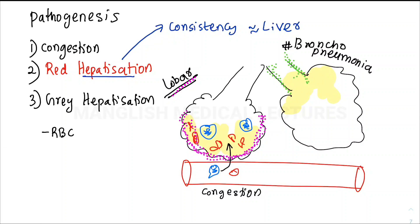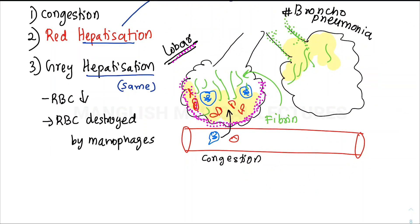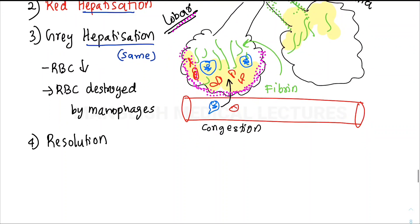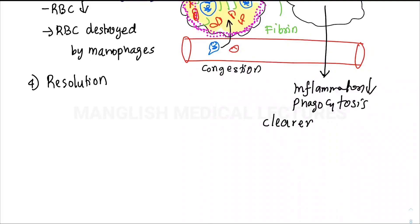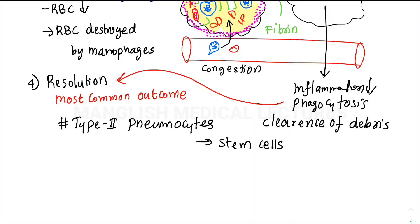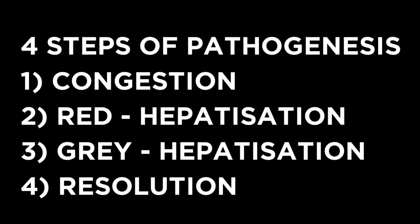The third stage is gray hepatization because the RBCs are decreasing in number, undergoing disintegration or destruction by the macrophages, but the consistency remains the same. The fourth one is resolution—there is decreased inflammation, increased phagocytic activity, and clearance of all the debris, which is the most common outcome. We attain resolution because of the presence of type 2 pneumocytes which are capable of regenerating. The four steps are congestion, red hepatization, gray hepatization, and resolution.